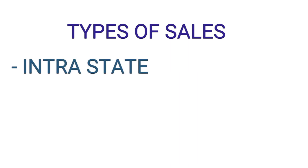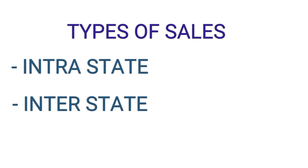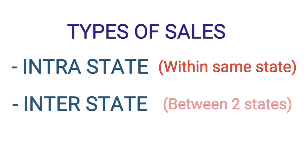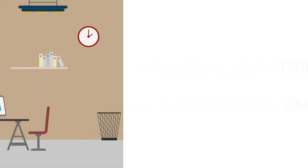In order to understand the GST applicable, we must first know which type of sale it is. There are two types of sales: Intrastate and Interstate. Intrastate is within the same state, when the buyer and the seller are from the same state. And Interstate is from one state to another state of the country.